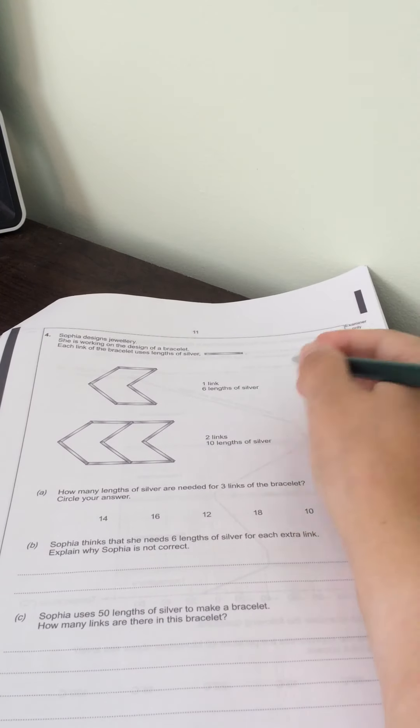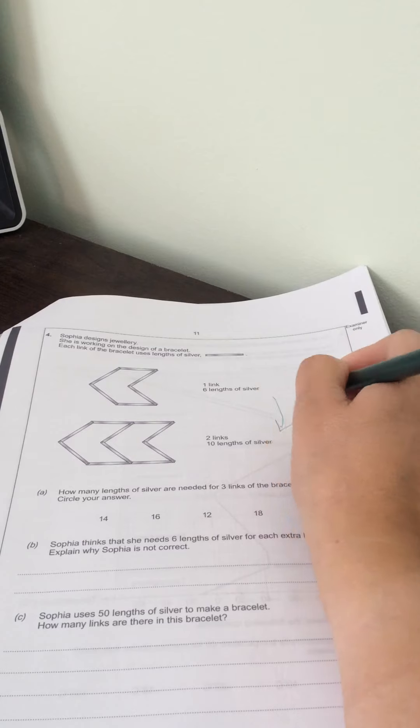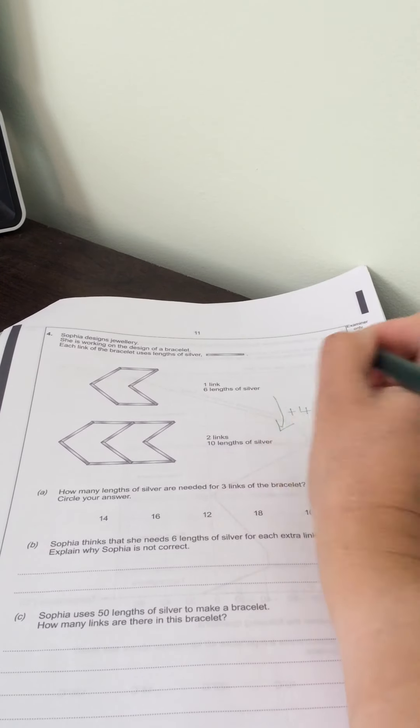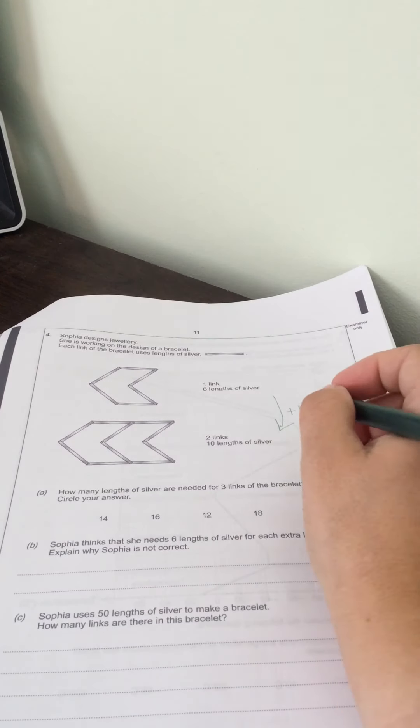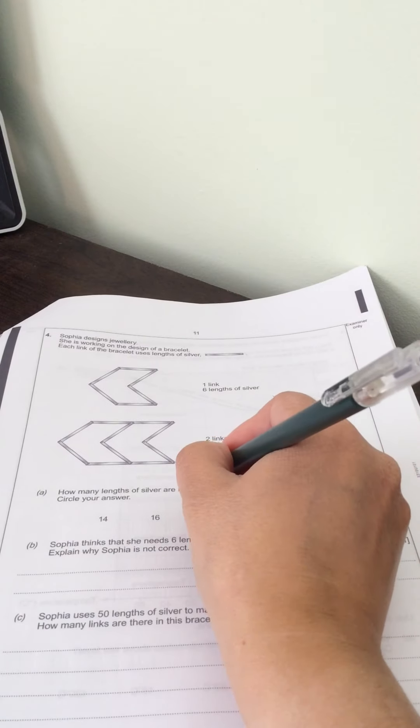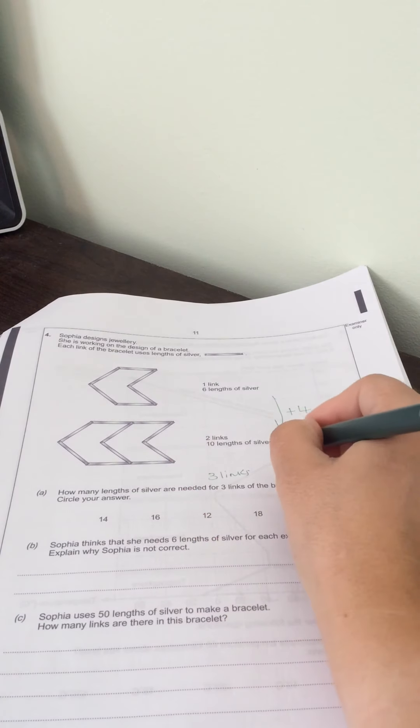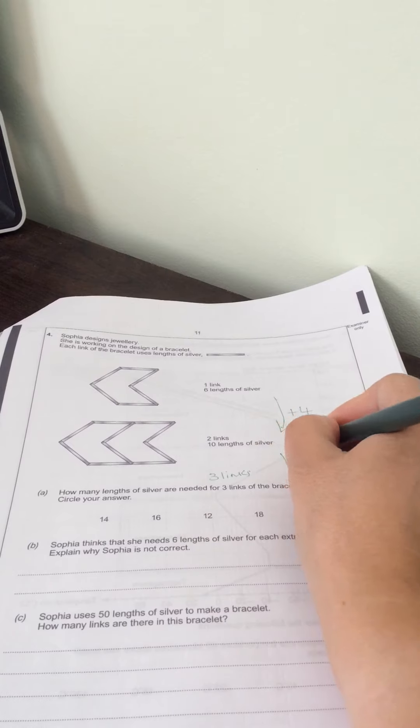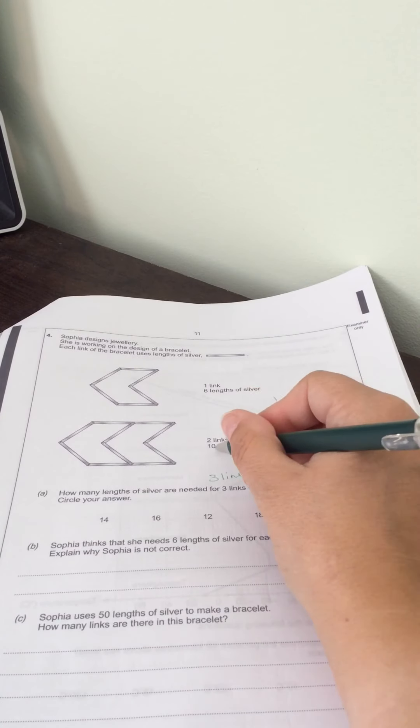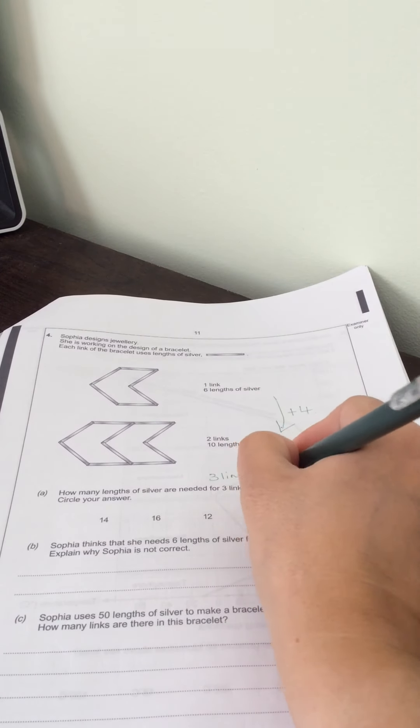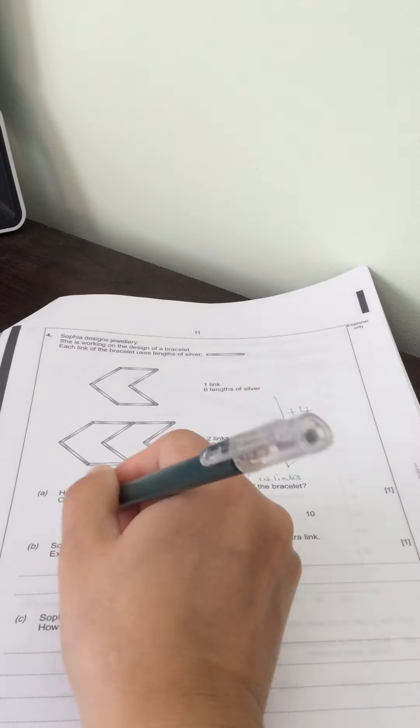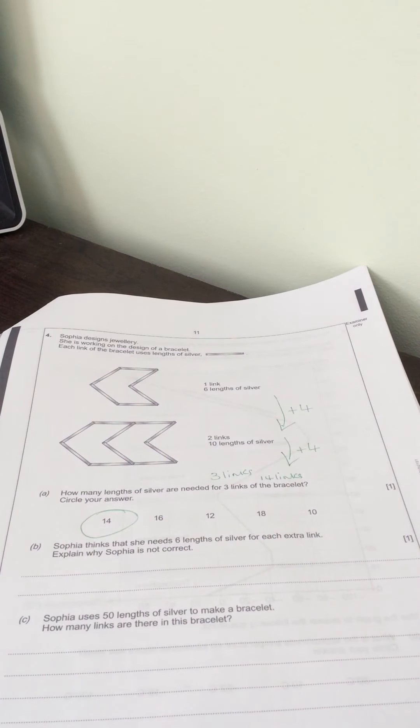Well to go from one link to two links the length of silver needed was an extra four. So to get from two links to three links you'd add another four lengths of silver. So ten plus four is fourteen links. So fourteen is the answer that I'm going to circle.